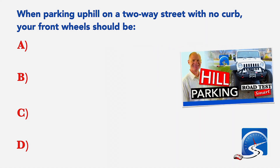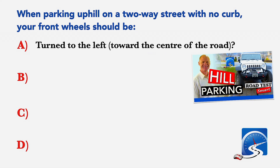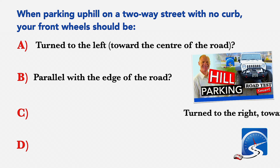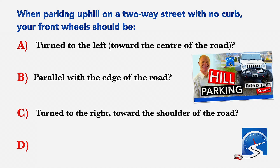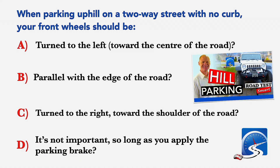When parking uphill on a two-way street with no curb, your front wheels should be: A: Turned to the left toward the center of the road. B: Parallel with the edge of the road. C: Turned to the right toward the shoulder of the road. D: It's not important so long as you apply the parking brake. Correct answer C: Turn to the right toward the shoulder of the road.